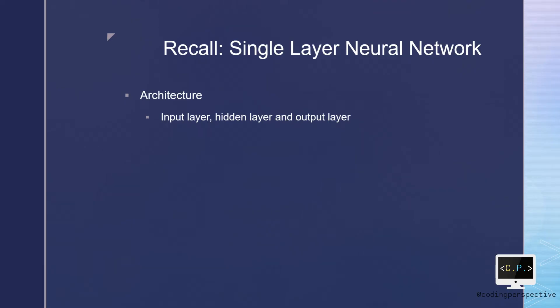Recall what single layer neural networks were. As you remember, they are the simplest architecture and have only one hidden layer. This means we have three layers in total: input, hidden, and output layer.